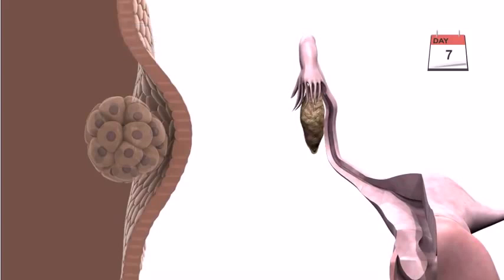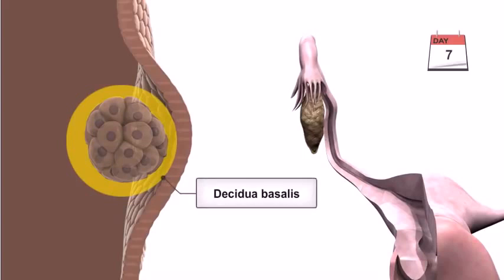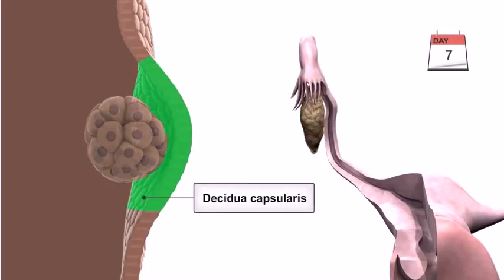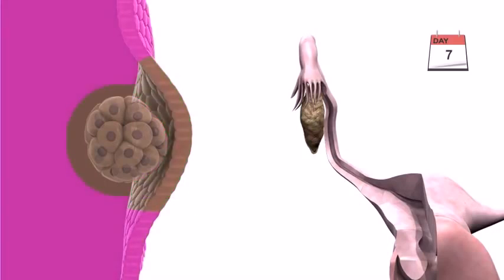The regions of the decidua have specific names relative to the site of blastocyst implantation. The area between the embryo and the stratum basalis is known as the decidua basalis. The area between the embryo and the uterine cavity is the decidua capsularis, and the remaining area is known as the decidua parietalis.